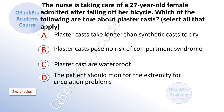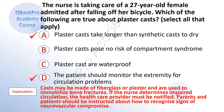The nurse is taking care of a 27-year-old female admitted after falling off her bicycle. Which of the following are true about plaster casts? Select all that apply. A. Plaster casts take longer than synthetic casts to dry. B. Plaster casts pose no risk of compartment syndrome. C. Plaster casts are waterproof. D. The patient should monitor the extremity for circulation problems. The correct answers are A and D. Casts may be made of fiberglass or plaster and are used to immobilize bone fractures. If the nurse determines impaired circulation, the healthcare provider must be notified. Parents and patients should be instructed about how to recognize signs of neurovascular compromise.